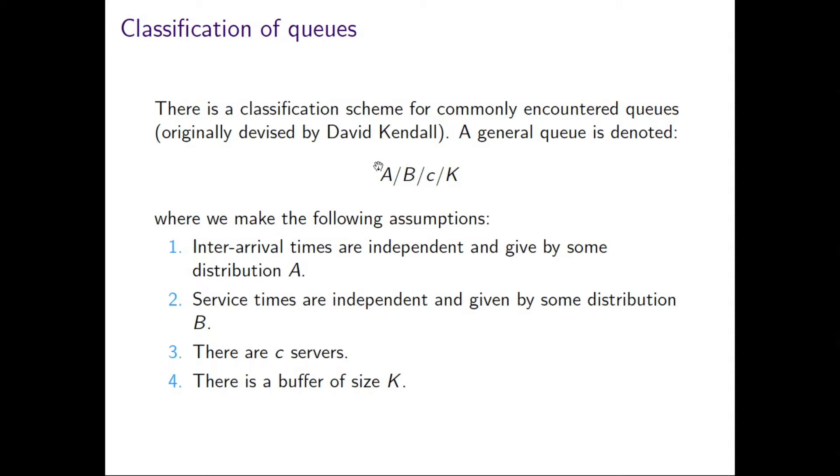But often the queues that are studied have M's for these two letters. The second letter refers to the amount of time it takes to serve someone. And often these two letters are M's, which are called Markovian queues, and they basically mean that the inter-arrival times and the service times are exponentially distributed.